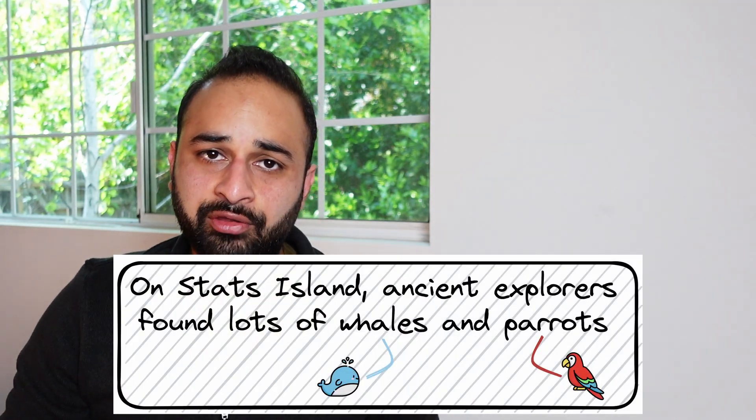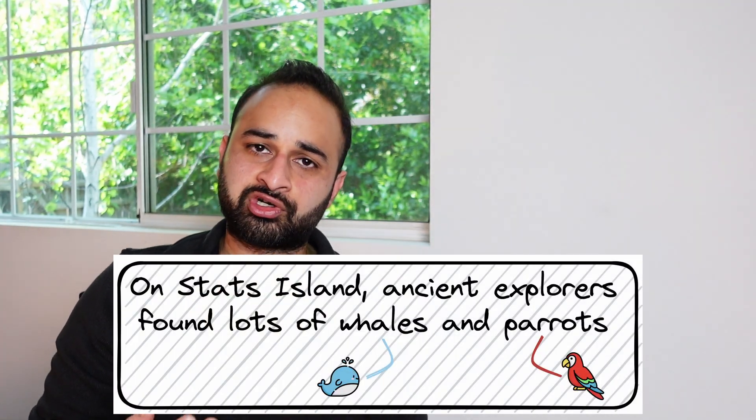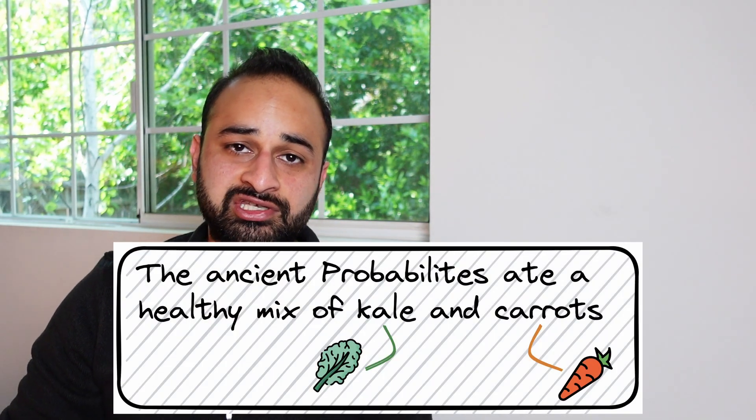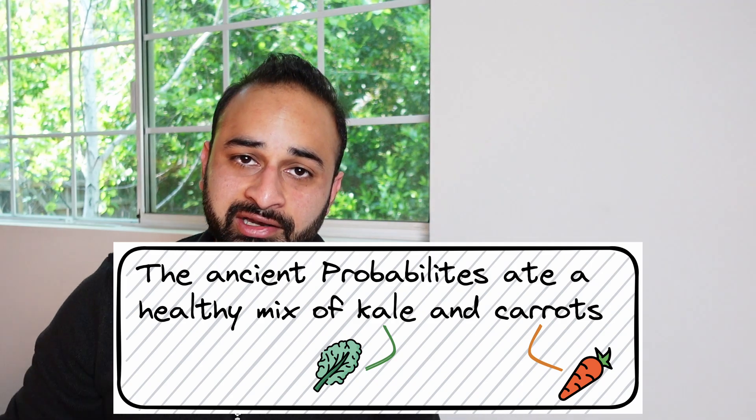I first want you to imagine that you are a nature lover — you may not have to imagine, maybe you already are one. You visit your local library and you pick up a book that looks really interesting about natural history. You're fully engrossed in this book, learning about the ancient settlers of Stats Island and how their hearts were captured by the native whales and parrots that lived there. You learn about the ancient probabilites and how they subsisted on a hearty diet of kale and carrots.